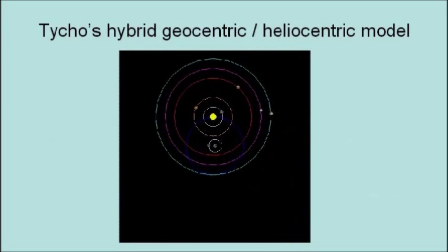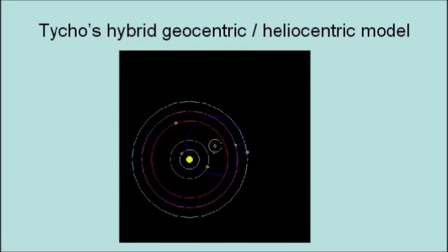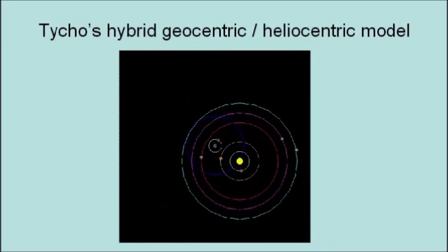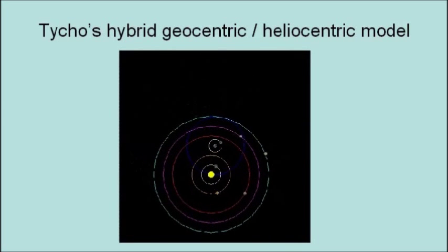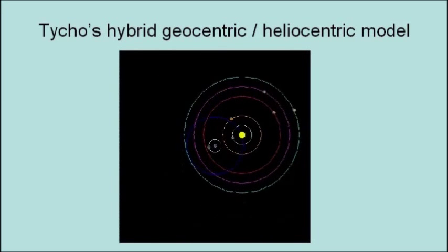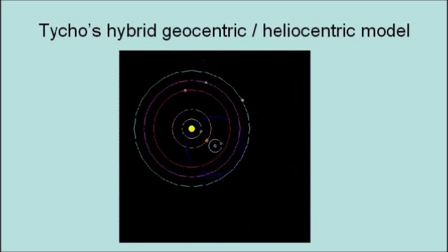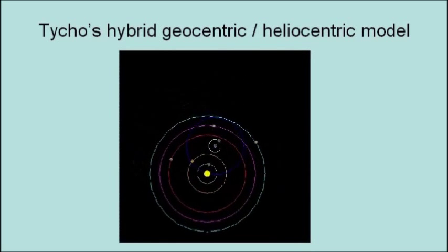Here is a video illustration of Tycho's hybrid geocentric-heliocentric model. Tycho's cosmology was essentially geocentric, in that everything ultimately went around the Earth. However, it was part heliocentric, in that the other planets were seen as going around the sun, while the sun went around the Earth.